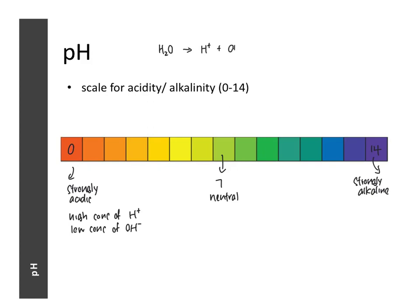Water's self-ionization produces hydrogen ions and hydroxide ions, so no matter how acidic a solution is, there will always be some hydroxide ions present. Conversely, a highly alkaline solution contains a high concentration of hydroxide ions but still contains a very low concentration of hydrogen ions formed from the self-ionization of water.